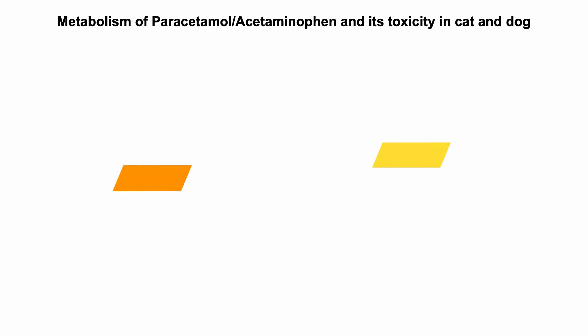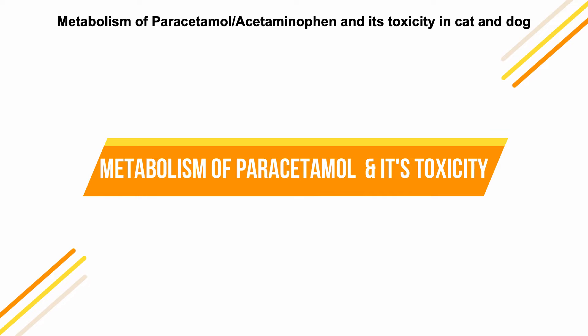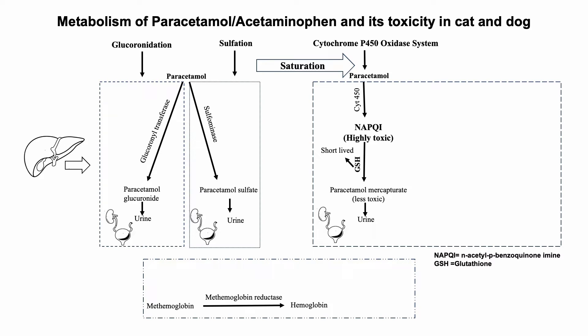Now I'll discuss the metabolism of paracetamol and how toxicity occurs in cats and dogs. Upon ingestion or administration of paracetamol, it is rapidly absorbed from the gastrointestinal tract and peak plasma concentrations are seen within an hour. Around 90 percent of the consumed paracetamol is detoxified by the liver via two major conjugation pathways. In the glucuronidation pathway, around 50 to 60 percent is metabolized to a non-toxic metabolite, paracetamol glucuronide, which is excreted in the urine via the kidneys.